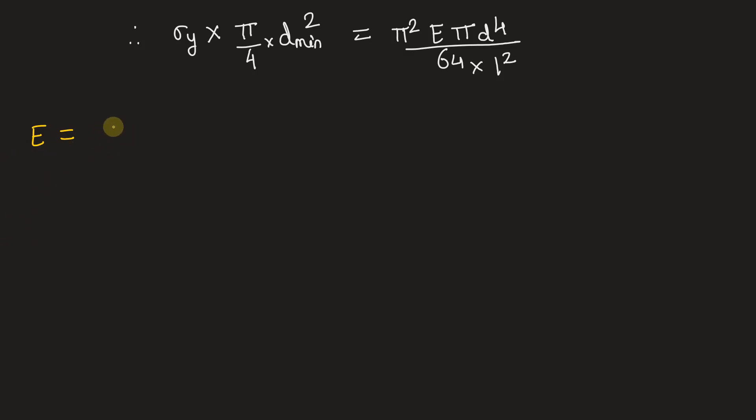So that is why we will take sigma y by epsilon y or stress at yield point upon strain at yield point. And the values that are given here are 100 divided by 0.002. So let us keep E also in MPa which is nothing but 0.5 into 10 to the power 5 MPa.